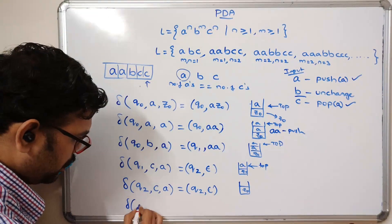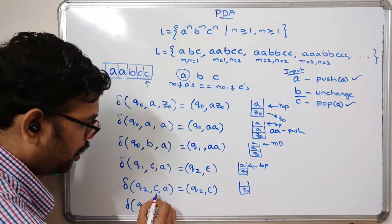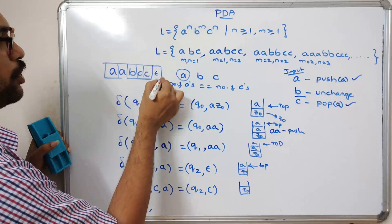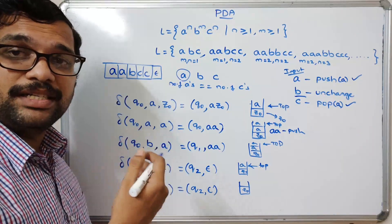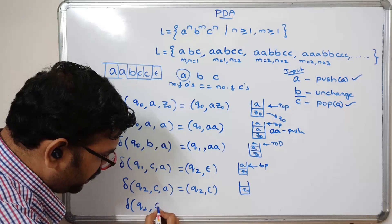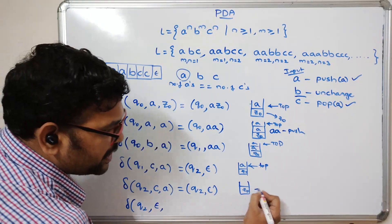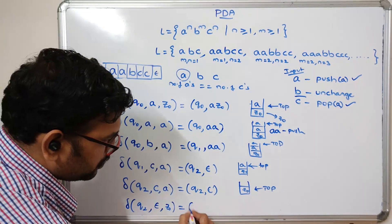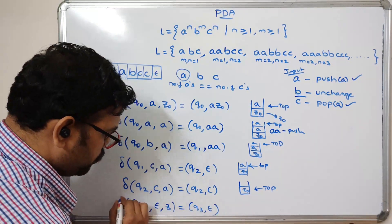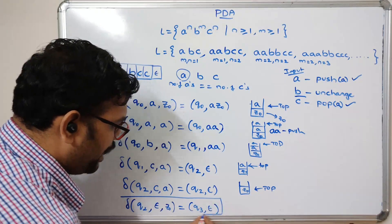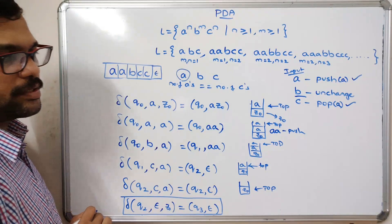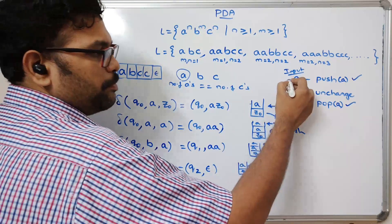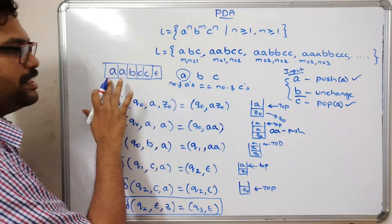Since there is no other input remaining, the input symbol is epsilon. So delta(q2, ε, Z0) gives q3 with epsilon — the process ends here. The machine accepts the string.